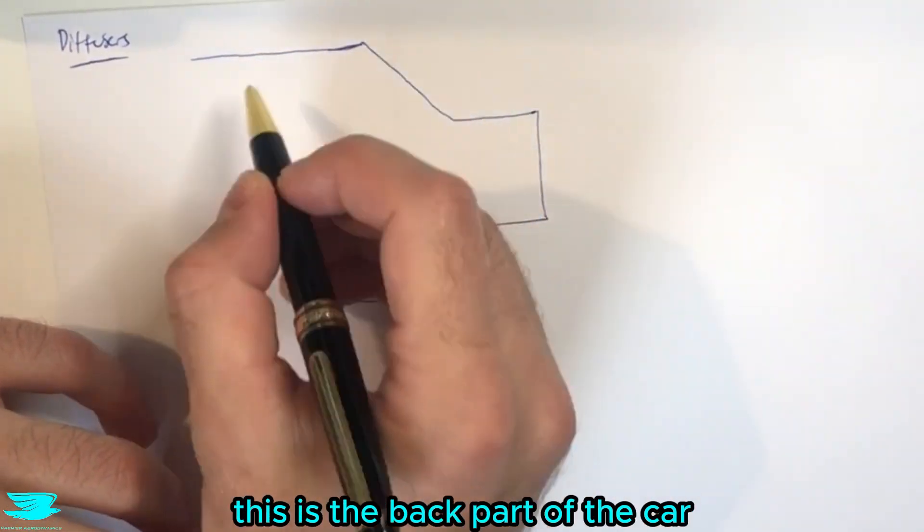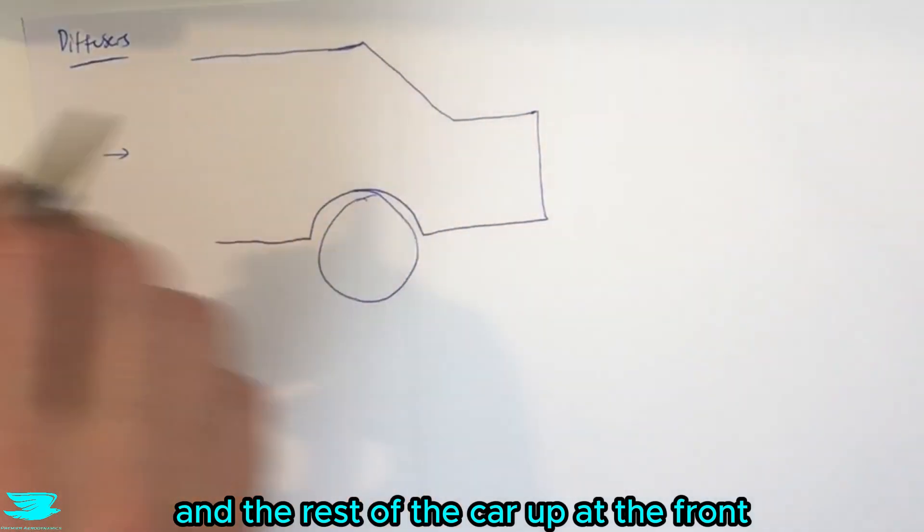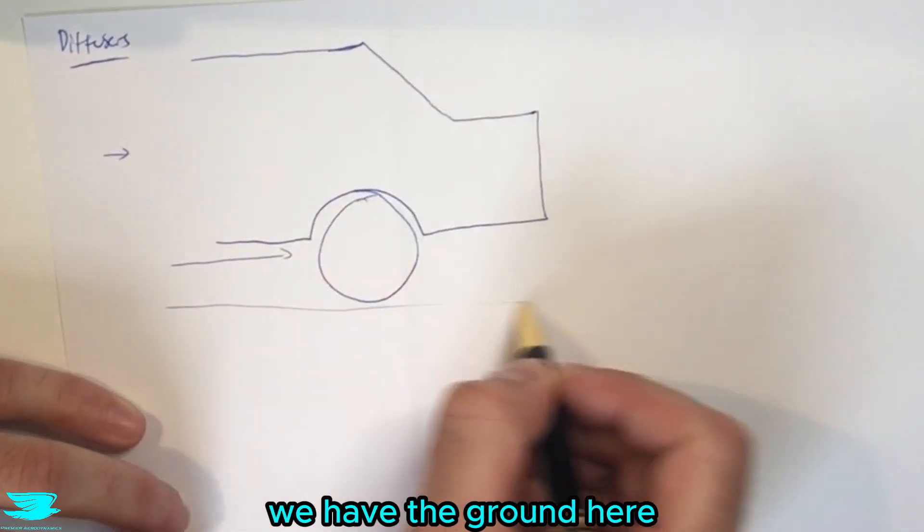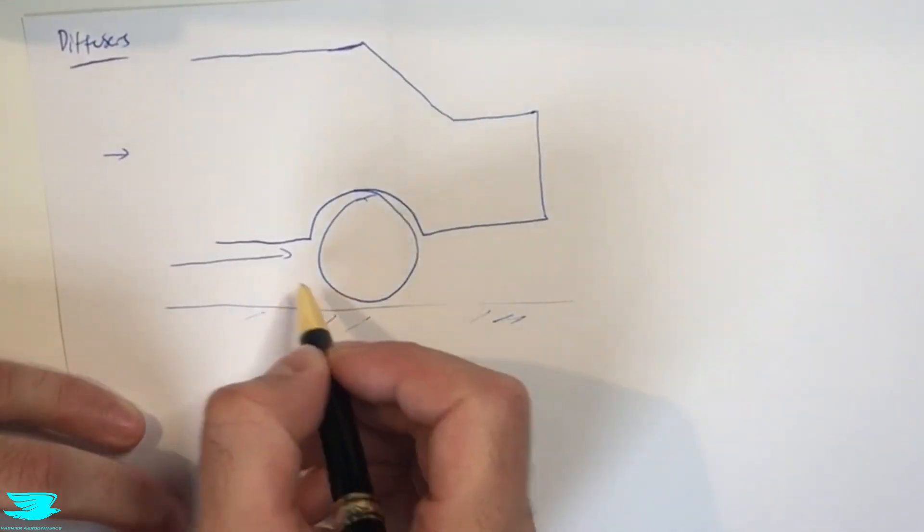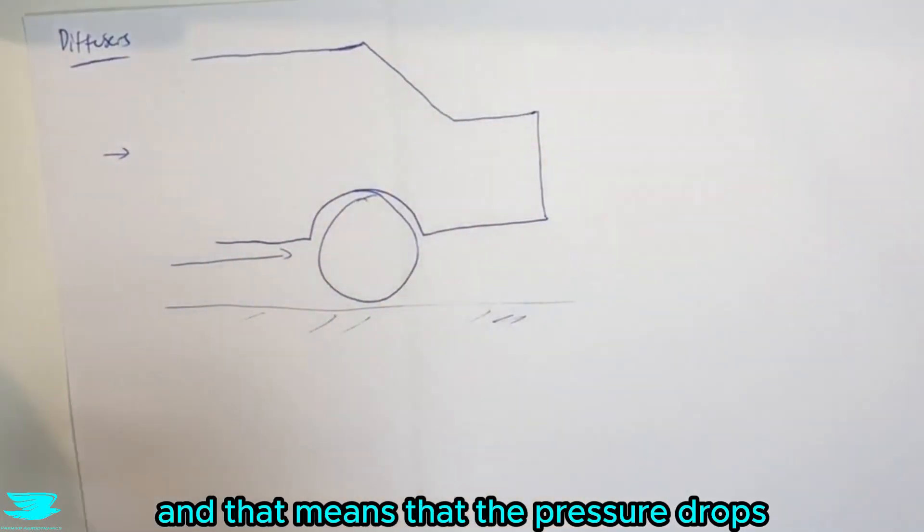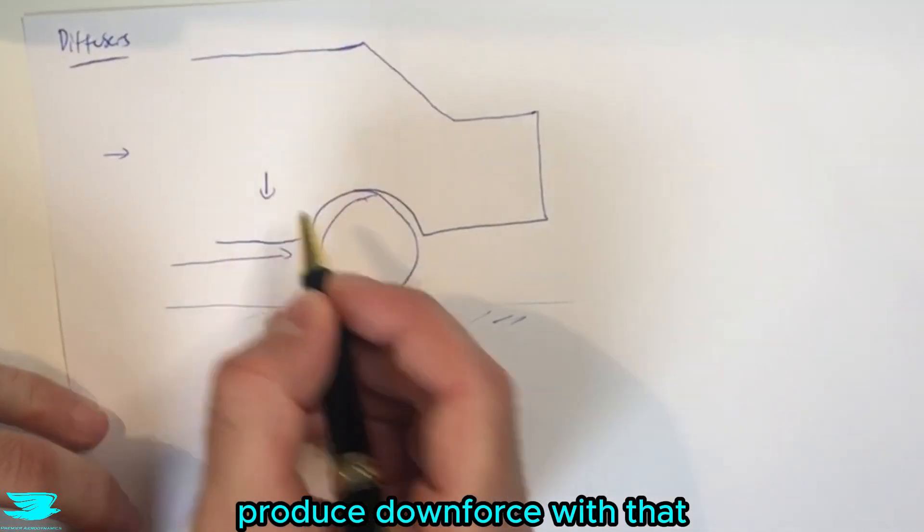Let's say we have a regular car here, this is the back part of the car and we have the freestream flow coming in here and the rest of the car up at the front and under the body. The flow comes here and we have the ground here. Now usually the flow under the body will start to accelerate and that means that the pressure drops, and that's usually a good thing because we can actually produce downforce with that.